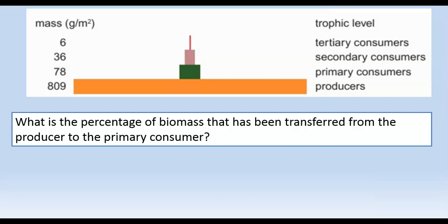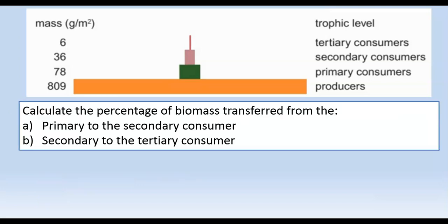For this question it asks: what is the percentage of biomass that has been transferred from the producer to the primary consumer? The primary consumer had 78 grams per metre squared, divided by the total energy that came in, which was 809 grams per metre squared. To turn that into a percentage we multiply by 100, and that gives a value of 9.6%.